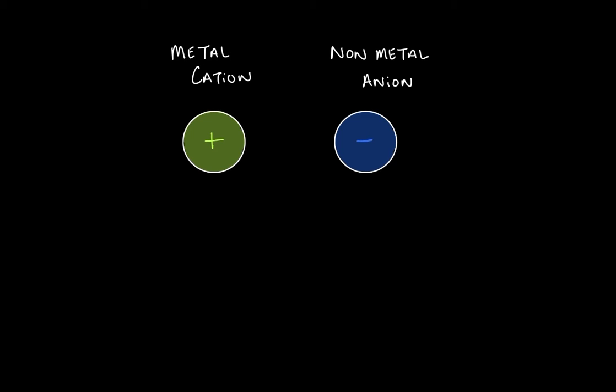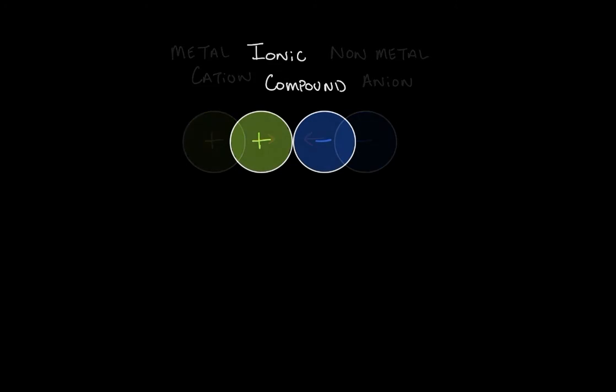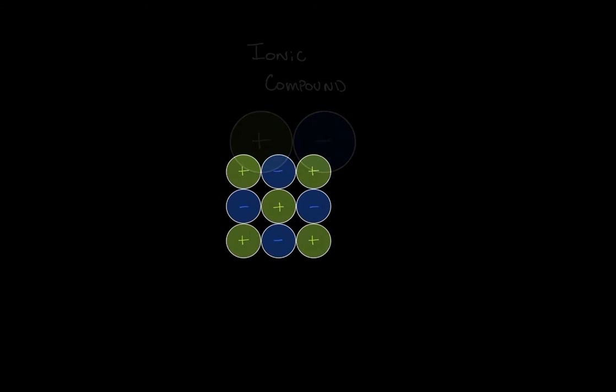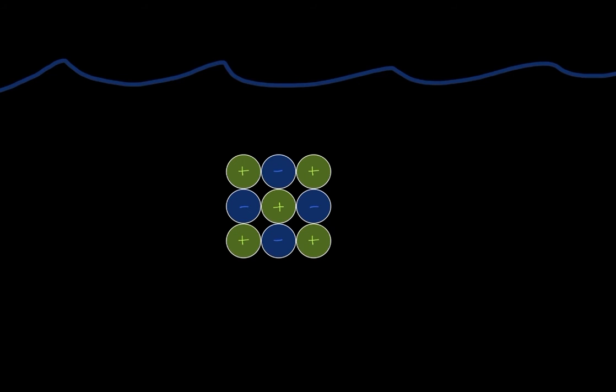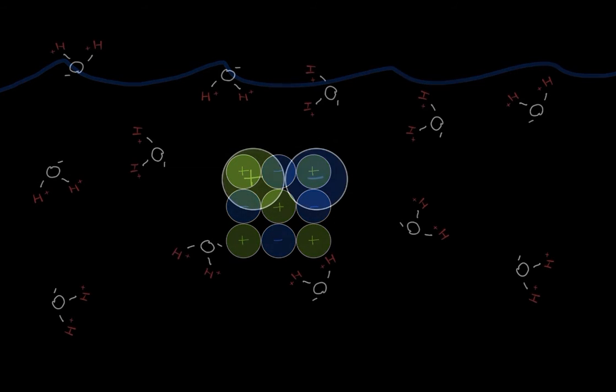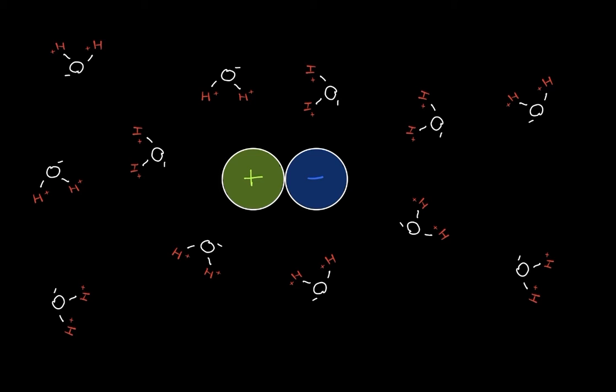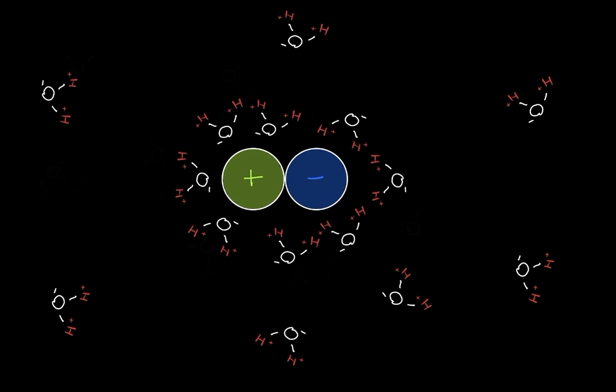These two particles are electrostatically attracted to each other and form an ionic compound. When we take an ionic compound and we put it in water, the polar water molecules interact with the cations and anions, and so the water molecules will orient themselves as so.